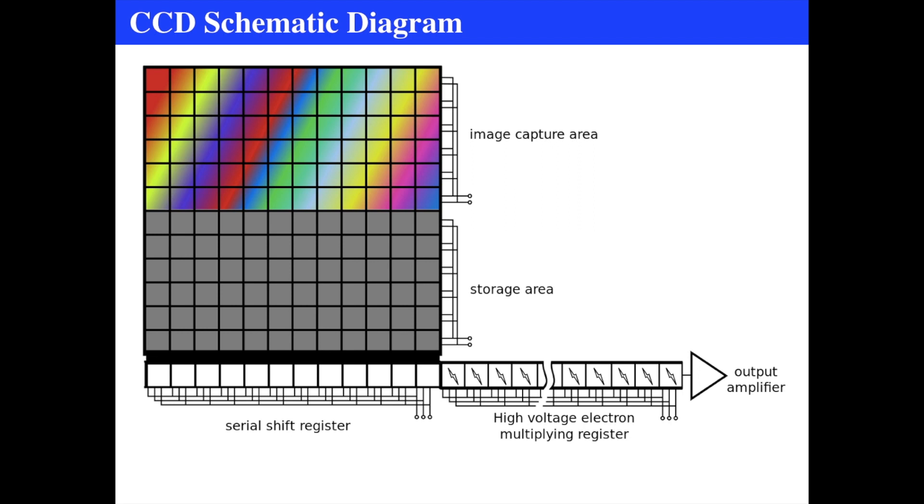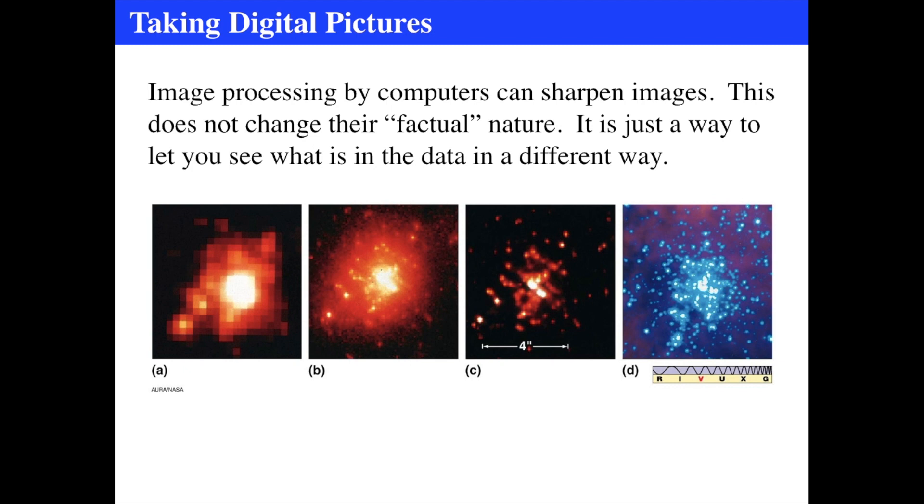The output amplifier actually amplifies, multiplies the total number of electrons in there. So if you have one electron, it'll maybe multiply by a thousand volts, so you can actually read the image. You capture in the image capture area, it gets dumped over to the storage area one to one, and then you shift from the series, and then you go one at a time into the shift register, and then that gets dumped into the multiplier and then out to actually see exactly how many electrons there were.